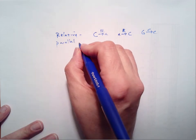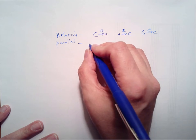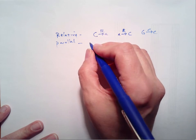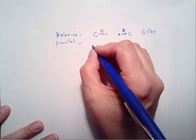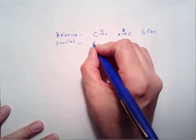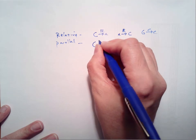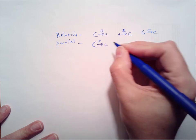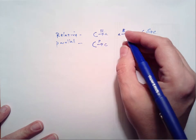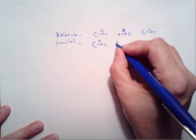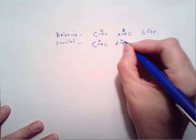Parallel are keys which have the same tonic but different key signatures. Parallel of C major is C minor. Parallel of A major is A minor.